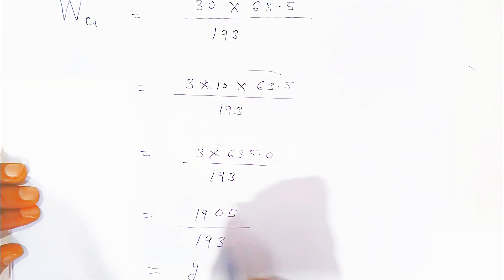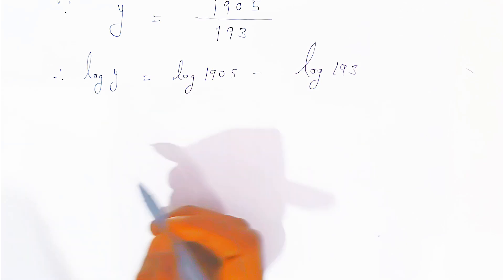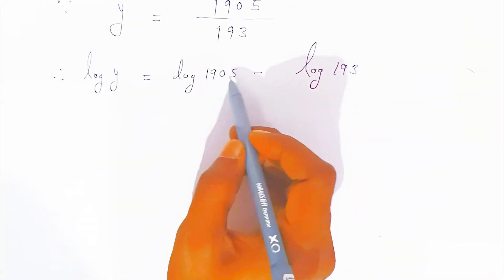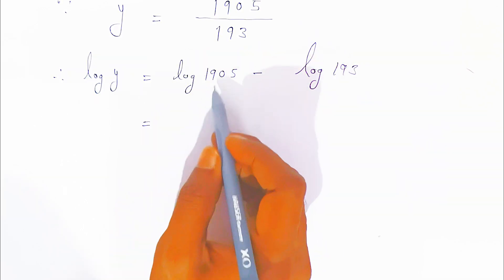Consider this as y grams. To calculate y, since it is a division, take log on both sides: log y = log 1905 − log 193. For log 1905: four digits, so the characteristic is 4 − 1 = 3. In the log table, row 19, column for 0, with mean difference for 5 added, you get 2799.